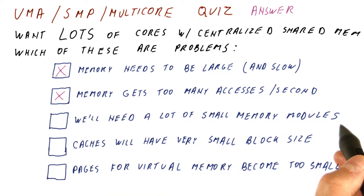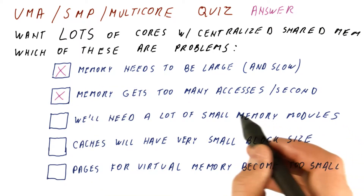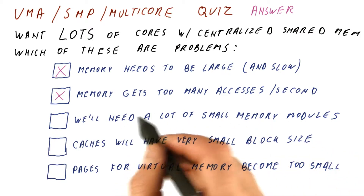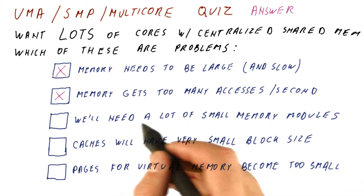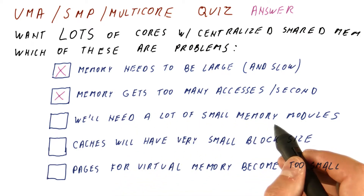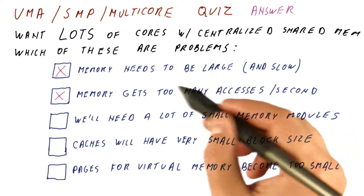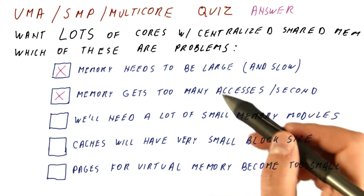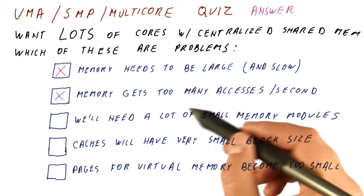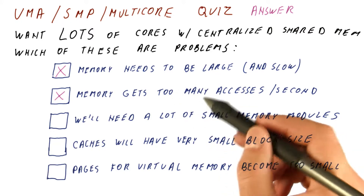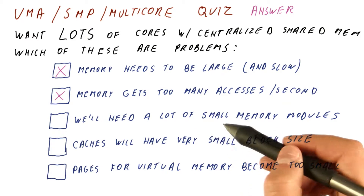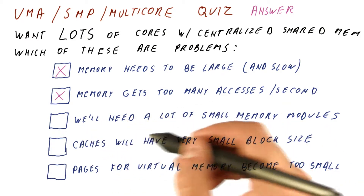We'll need a lot of small memory modules — not necessarily. The number of memory modules in a centralized memory doesn't matter. What is really needed is to have enough memory for all the cores to get enough data, and memory that will keep up with the bandwidth demands of the cores. How many modules we have doesn't really matter.